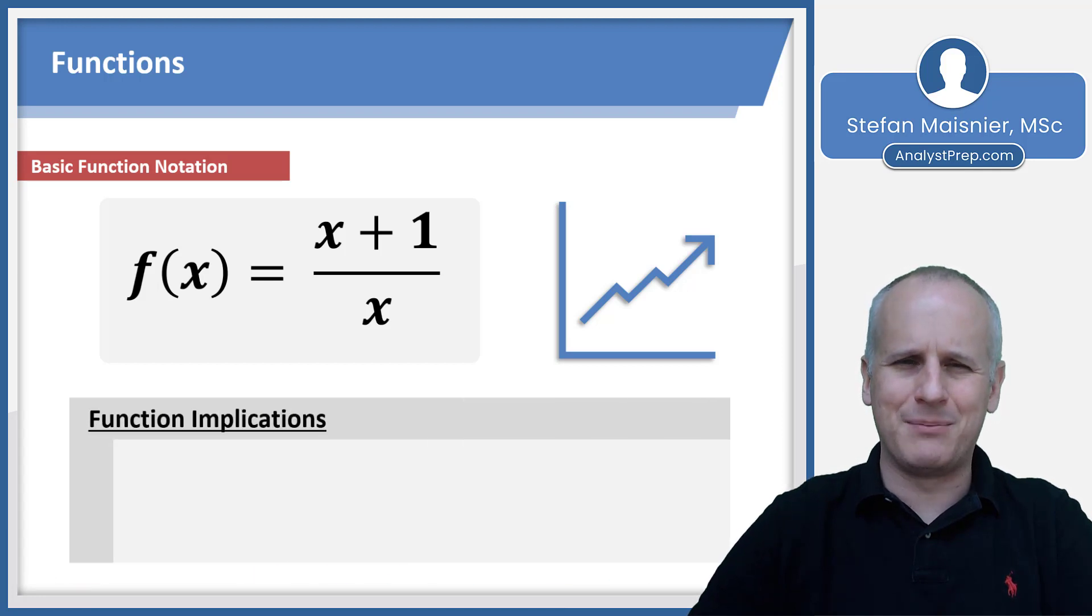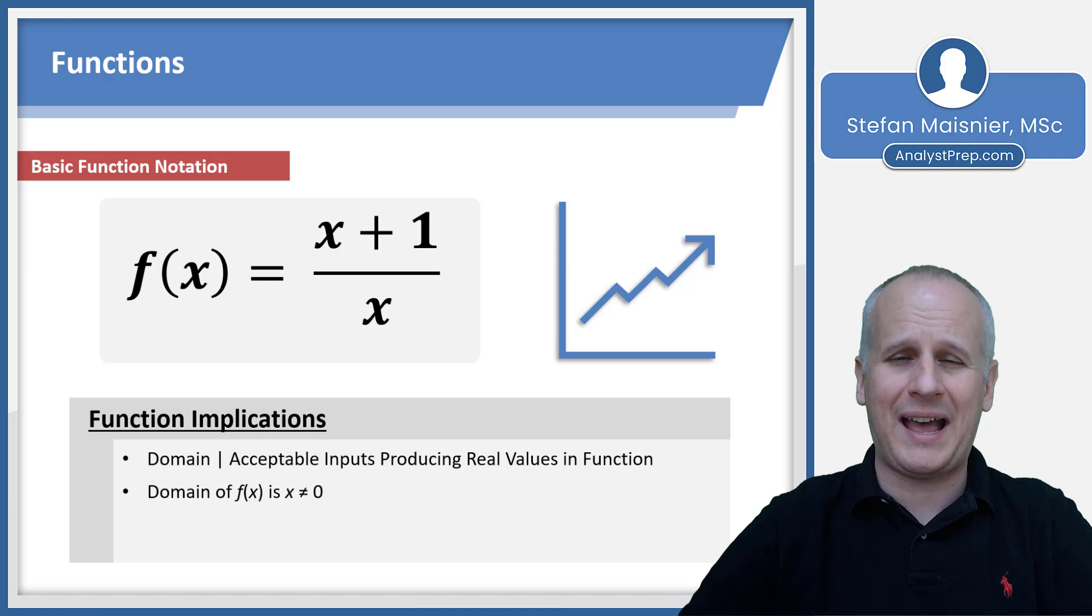Let's talk about the implications for functions. First is the idea of a domain, and a domain simply is going to outline the acceptable inputs producing real values for the function. For the purposes of the GMAT, you do not need to worry about any values that cannot be represented on the number line. For this function, the domain is x cannot equal zero. It can equal absolutely anything else, because if you divide by zero as the value of x, the result is actually infinity, because zero can go into any value forever. A domain is just what are the acceptable inputs.